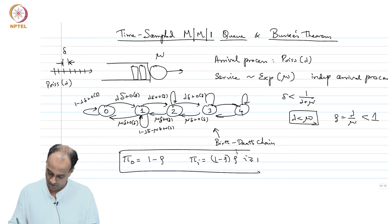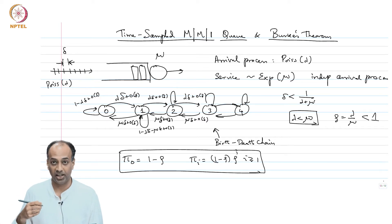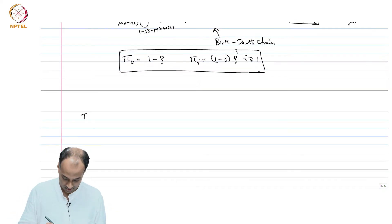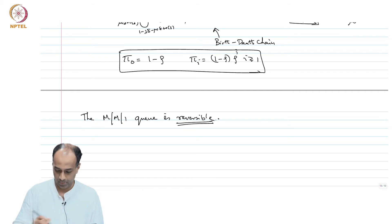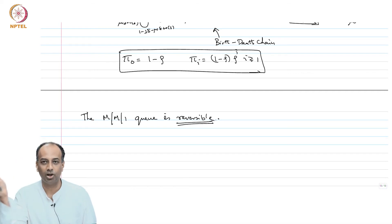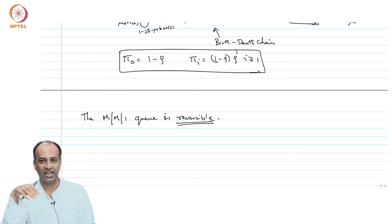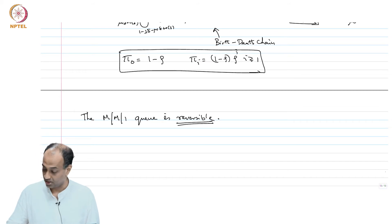My main topic of discussion here is reversibility. This is the birth-death chain and birth-death chains are reversible, so the MM1Q is reversible. More precisely, the time-sampled Markov chain of the MM1Q is reversible. In fact, the MM1Q as a continuous-time Markov process is also reversible.